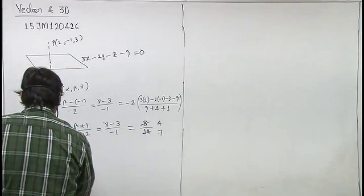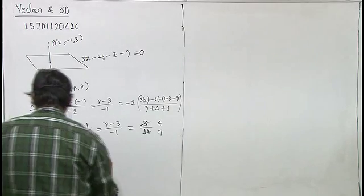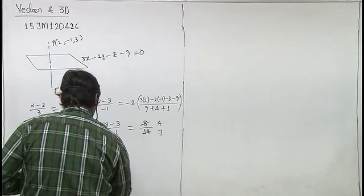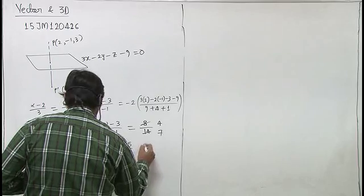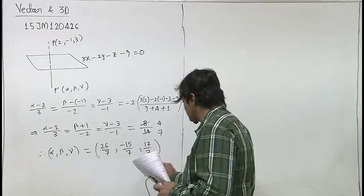So from here when we find alpha, beta, gamma, this will come out to be 26 by 7, minus 15 by 7 and 17 by 7. That means B is the correct answer.